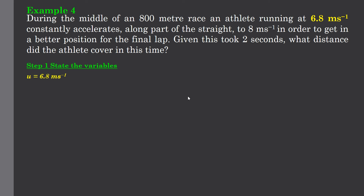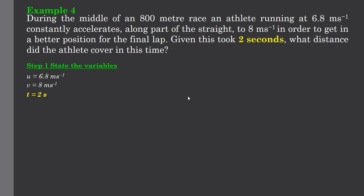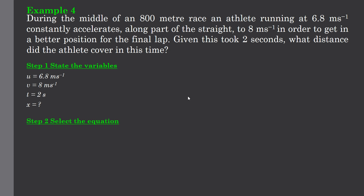So, our variables. Again, we've got an initial velocity of 6.8 meters per second. That's u. A final velocity of 8 meters per second. That's the end of the story. That's v. The time it took for that change is 2 seconds. And I want to know what is the distance travelled x? Select our equation.